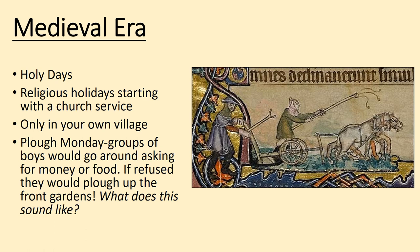Let's start by looking at the medieval era, from the year 500 to 1500. In the medieval era, holidays and travel were centered around holy days — religious holidays often starting with a church service. Religion was really important because it explained everything: the sun rose because God wanted it to, the sun set because God said so. If it rained and irrigated the crops, God was happy; a drought meant God was angry. If you were never sick, God was happy; constant illness meant God was punishing you.